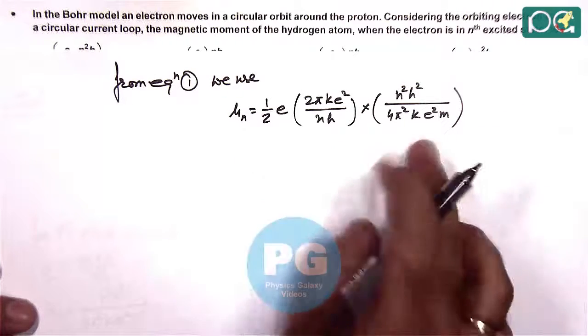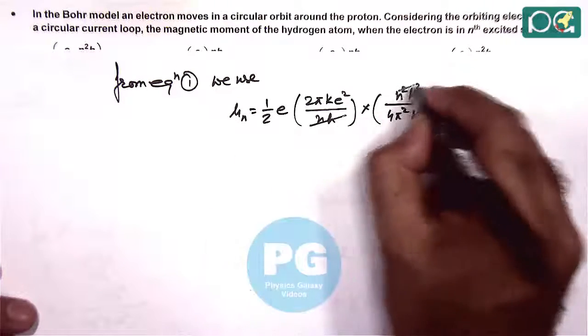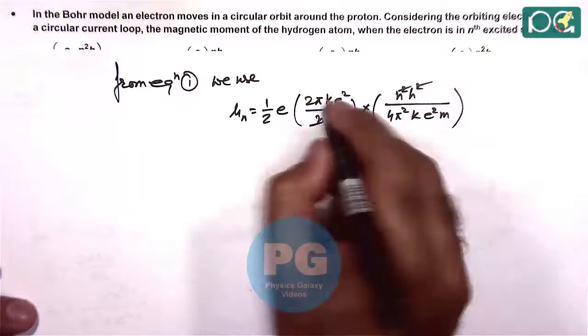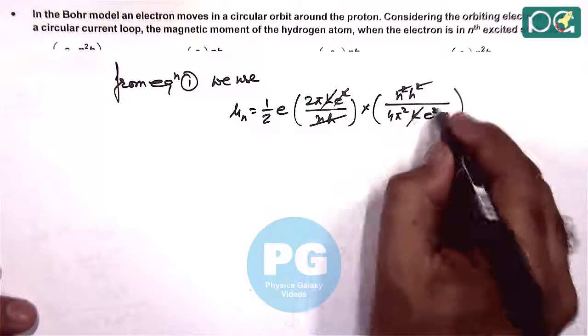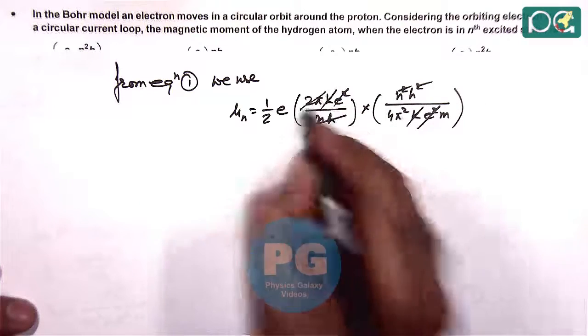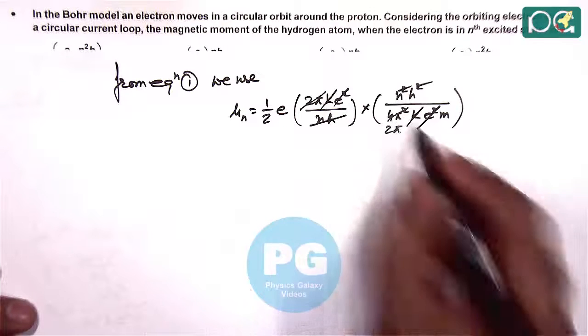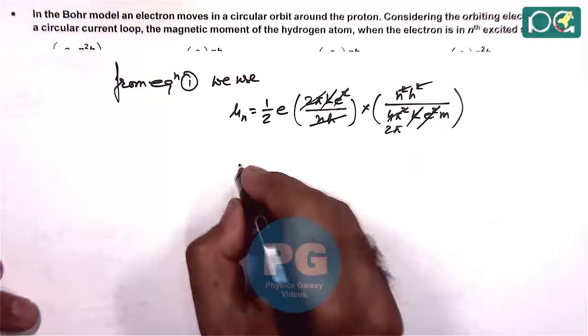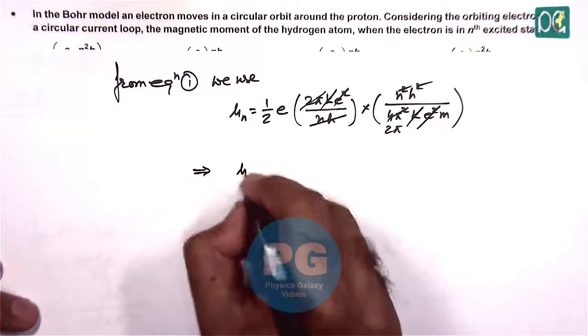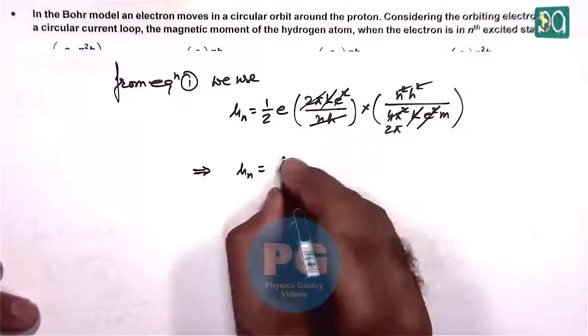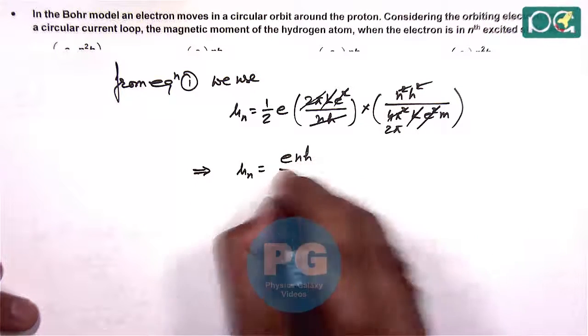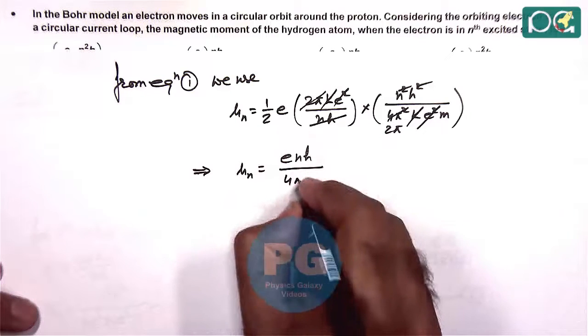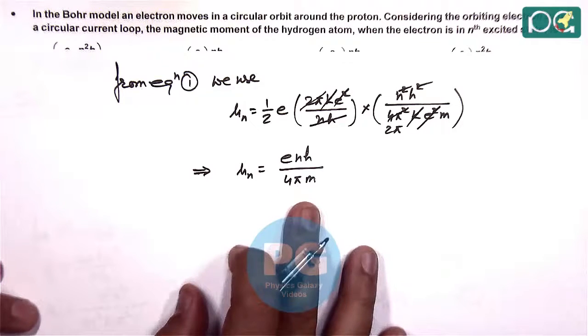If we carefully have a look here, nh gets cancelled out with the squares, k e square also gets cancelled out, and when 2π also gets cancelled out, a 2π will be left over. So this giving us the value of μn is equal to e n h over 4π m.